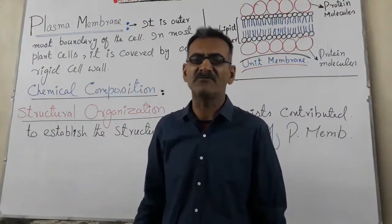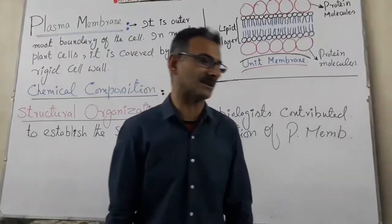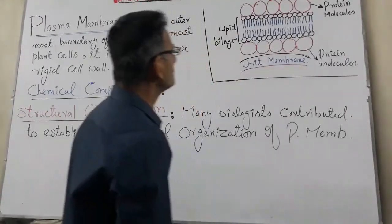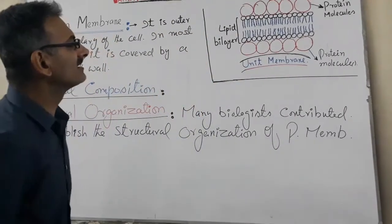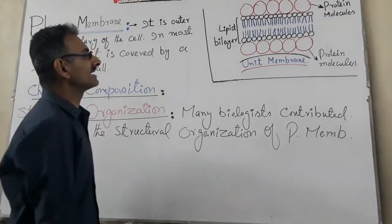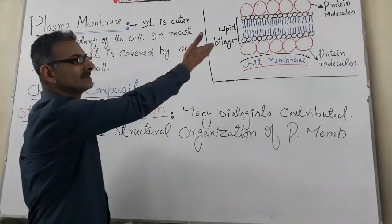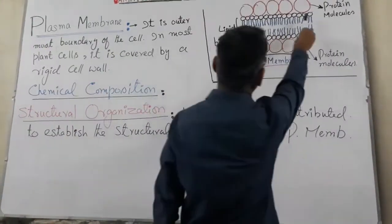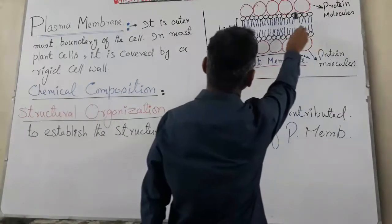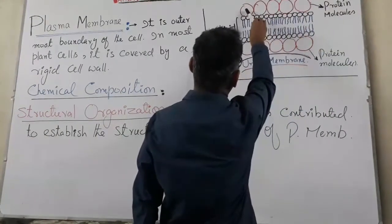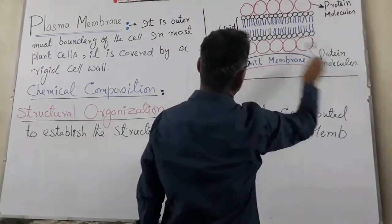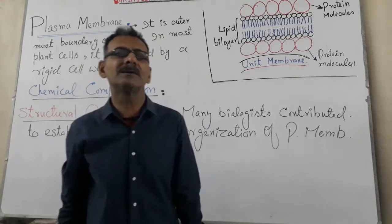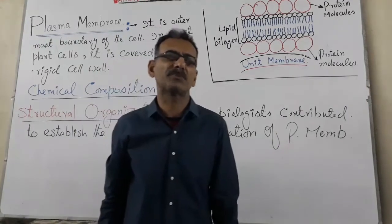The first model for the structure is the unit membrane model. This unit membrane model is given in the figure. This is the lipid bilayer, and an outer and inner layer of protein molecules is present.